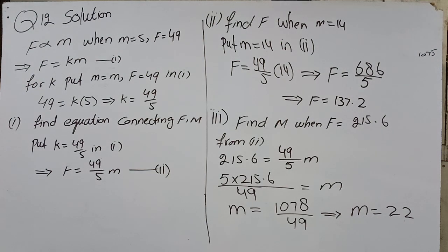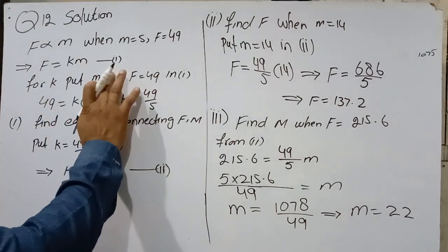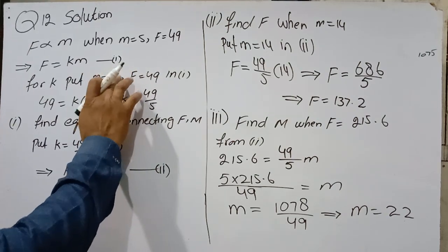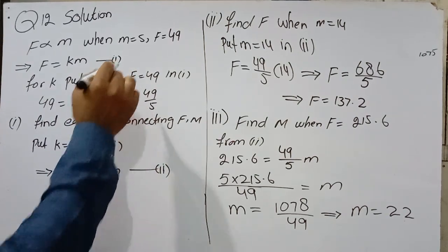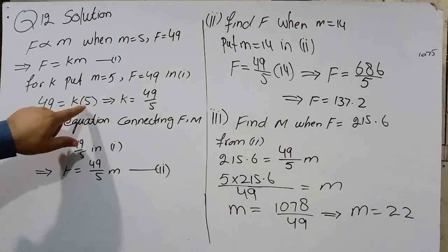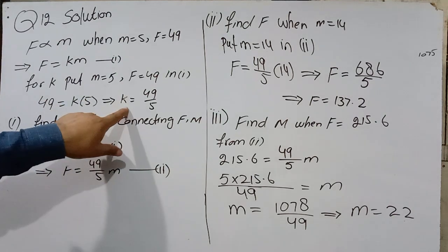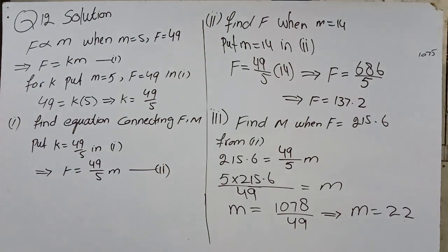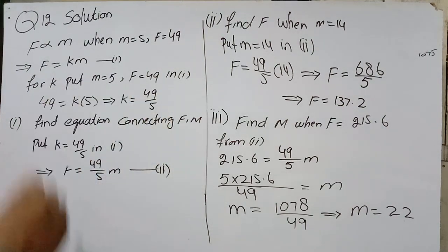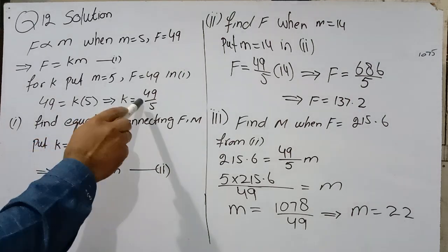First, find the value of K. For K, put M = 5 and F = 49 in equation 1. 49 = K(5). K times 5 is multiply, other side divide: K = 49/5. This is the value of K.